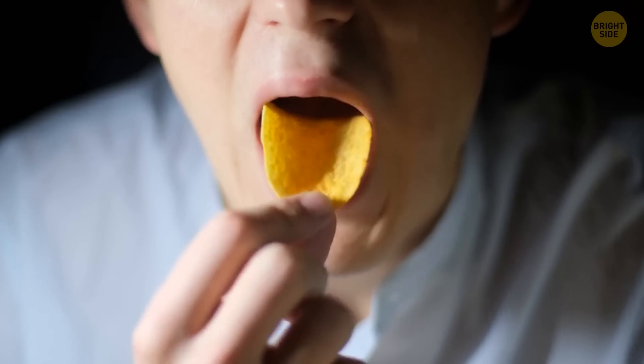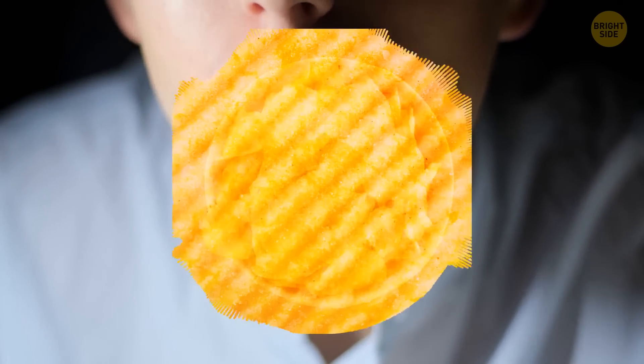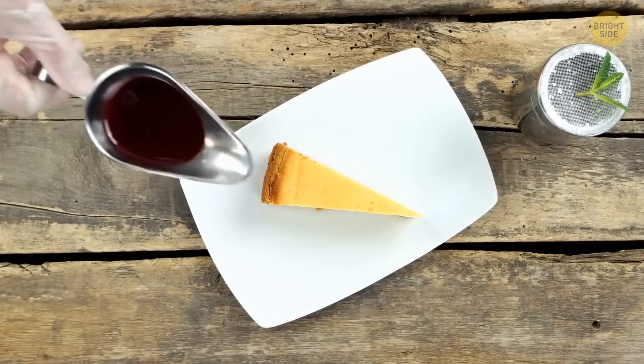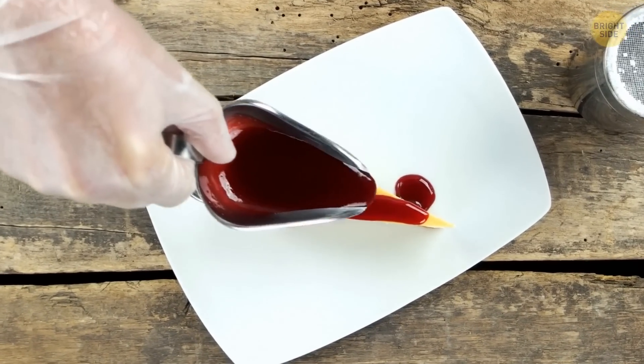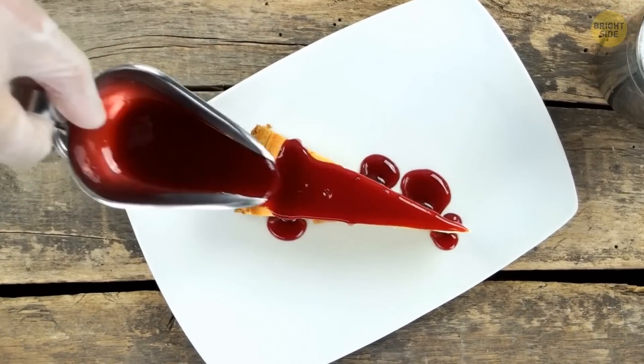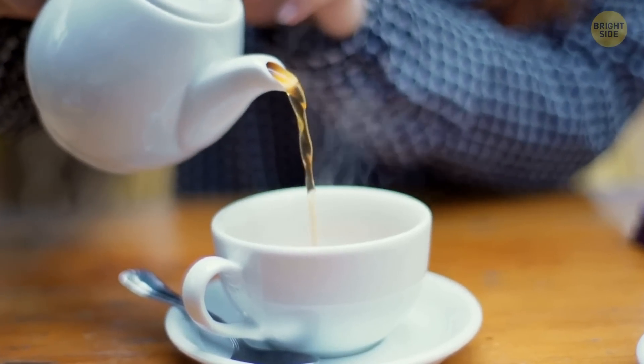Crisps will feel crunchier when you can hear the sounds of higher frequencies you produce when you crunch them. Studies have also shown that cheesecake tastes better and sweeter when it's served on a white plate compared to when it's served on a black one. We're conditioned to expect tea to be served in a ceramic cup. When we drink it from a plastic cup, we subconsciously expect vending machine tea that's not going to taste that good.